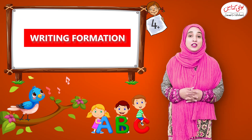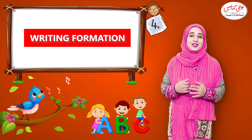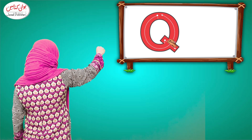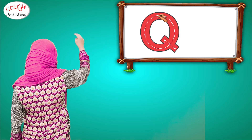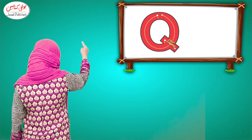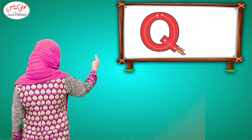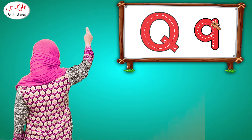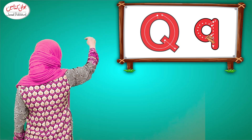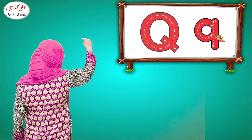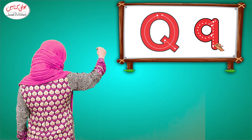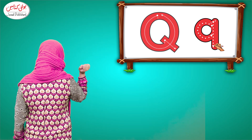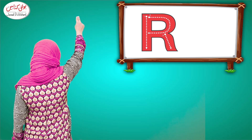Now let's talk about the writing of Q and R. For capital Q, first you have to make a round circle, and then make a line from the center — this is how Q looks. For small q, first make a half circle and then make a straight line from the center — this is how small q looks.